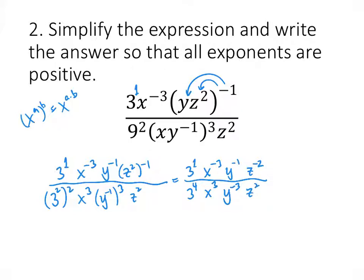Now we're going to subtract our exponents. We're going to take 1 minus 4, minus 3 minus 3, minus 1 minus minus 3, and minus 2 minus 2. That's going to give us 3 to the minus 3. Minus 3 minus 3 is minus 6. Minus 1 minus minus 3 is positive 2. Minus 2 minus 2 is minus 4.